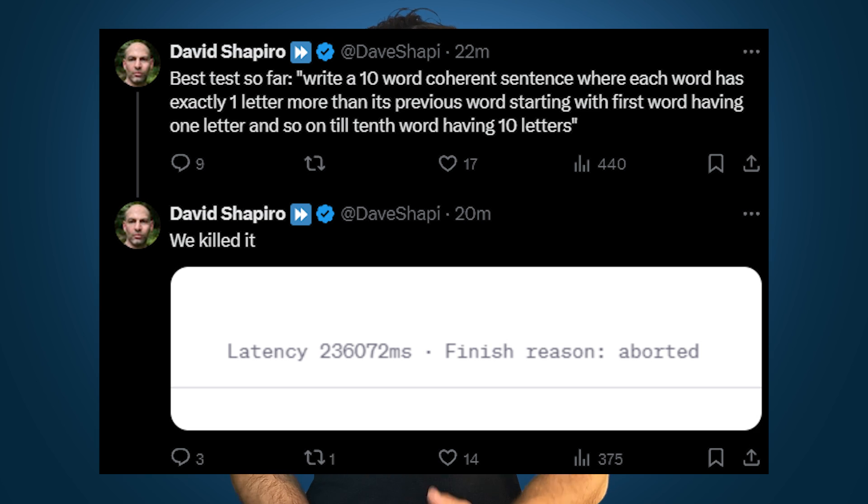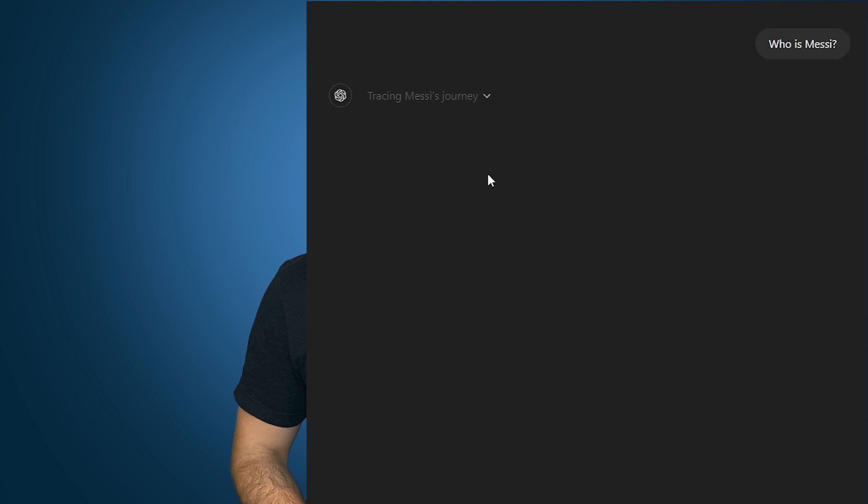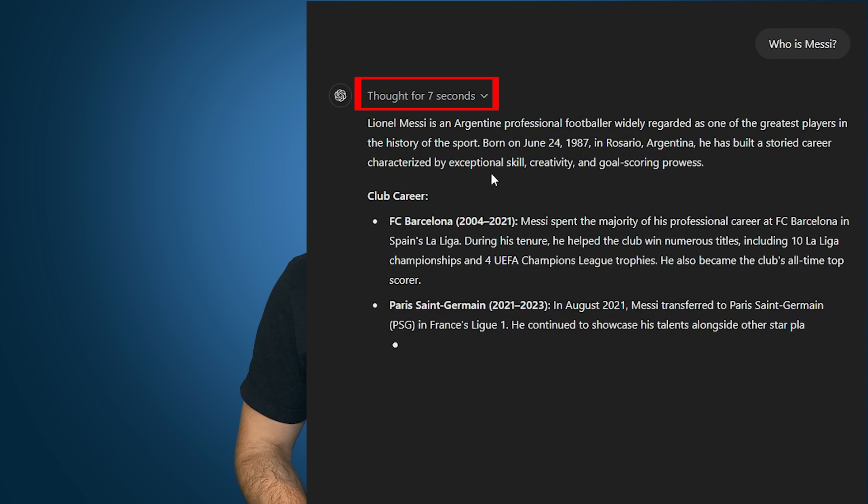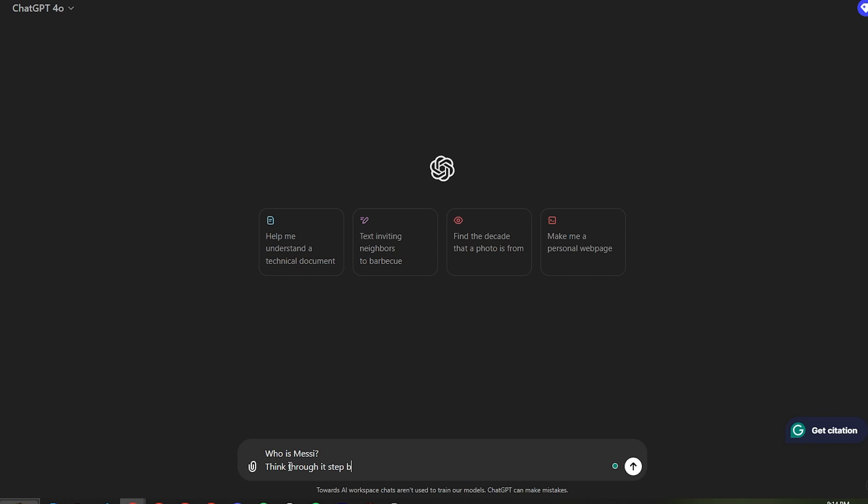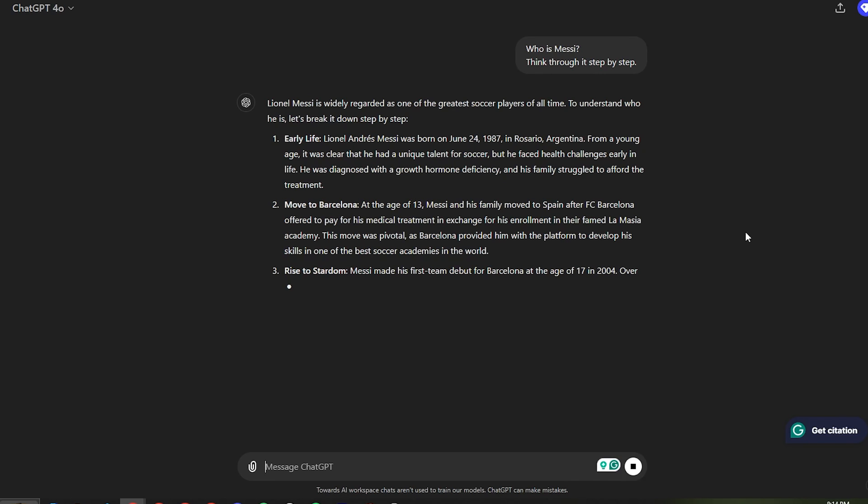When you ask a question, it takes longer because it's spending more compute on inference—basically, it's taking the time to reflect and refine its responses. Just as we would ask GPT-4 to think through it step-by-step with chain-of-thought prompting. But it does that every time because of how they further trained the model with reinforcement learning to force it to think step-by-step each time and reflect back before answering.